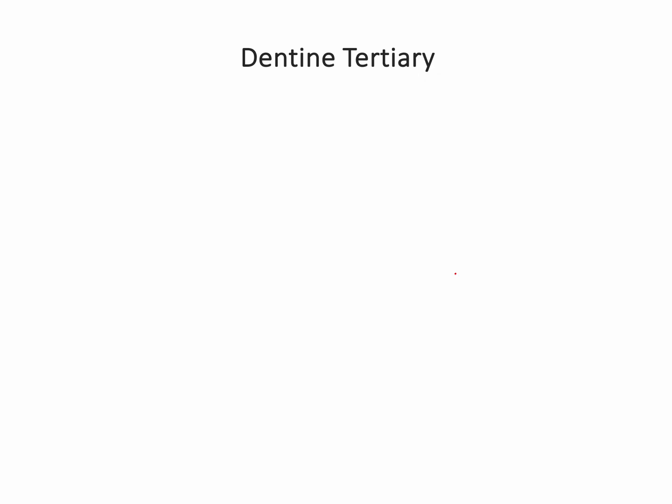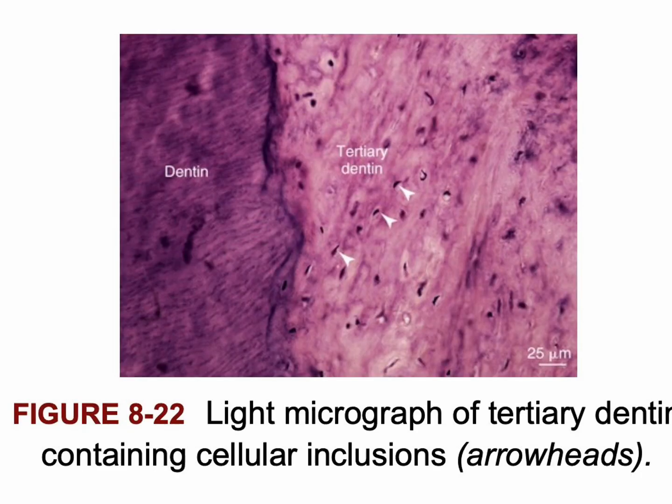Please look at this in the practical session presentation — it shows cell inclusions inside the tertiary dentine where the cells get trapped. You can see cellular inclusion in the tertiary dentine; the cells are trapped because the tertiary dentine was made very fast and the odontoblasts did not have time to retreat back into the pulp.